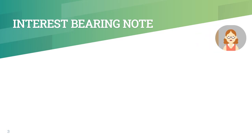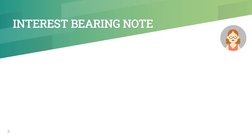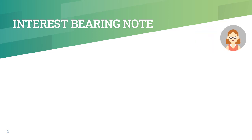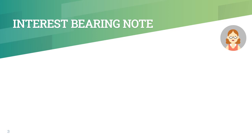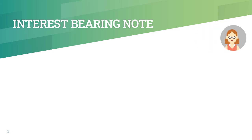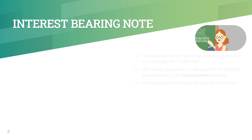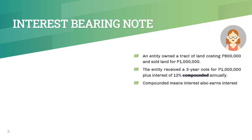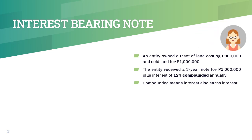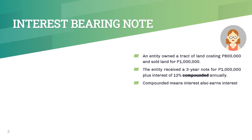Accounting for interest-bearing notes is quite straightforward. Interest may be either simple or compounded. In accounting problems, we will assume the latter — compounding simply means that interest earns interest. Say we have a note with a face value of 1 million pesos and earns interest at 12% compounded annually.